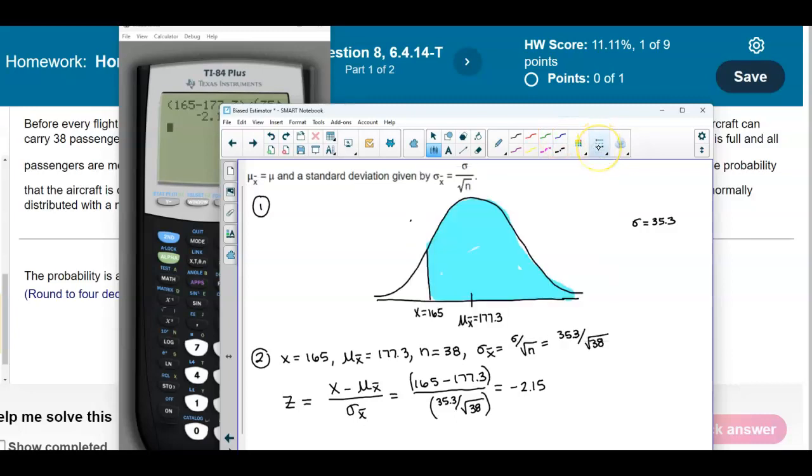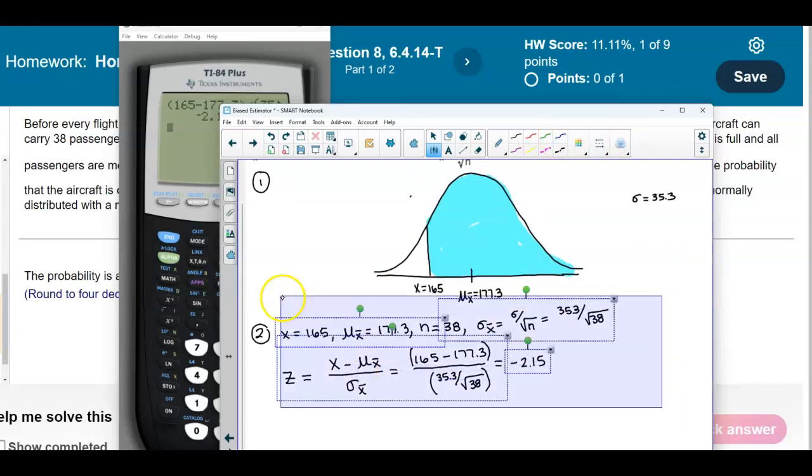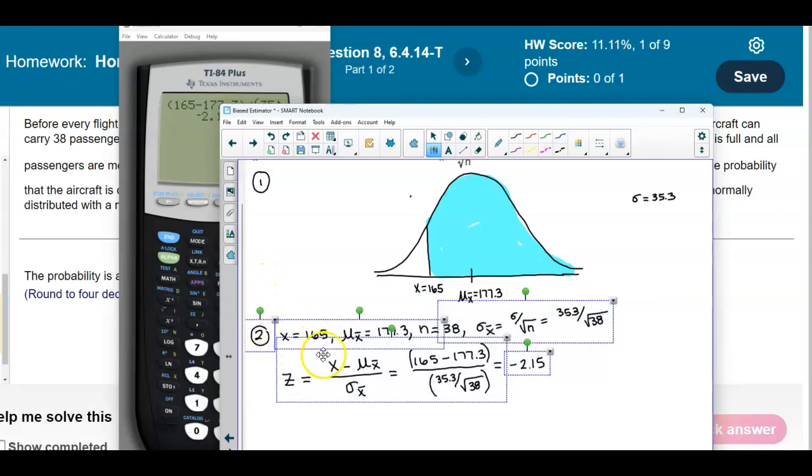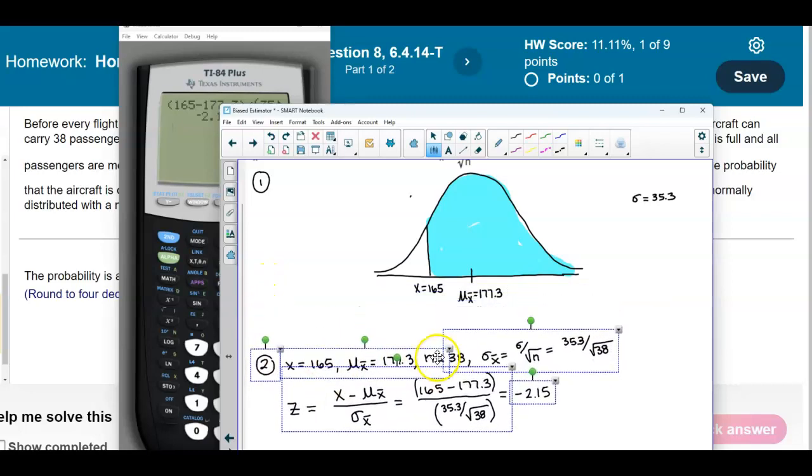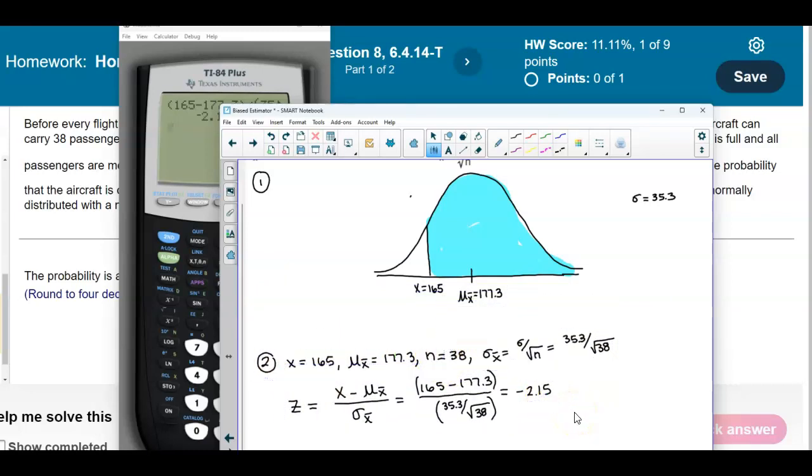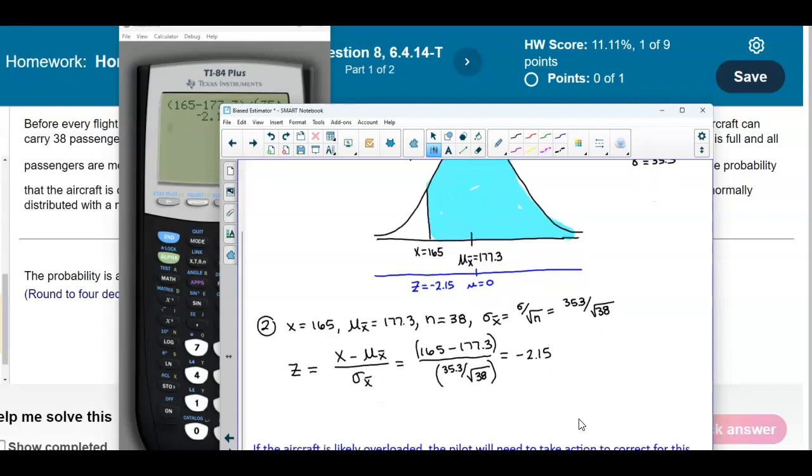Let's label that on our graph. We have our z-axis where the mean is zero, and the z-score for 165 is negative 2.15. What we want to do is find the probability of when z is greater than or equal to negative 2.15.